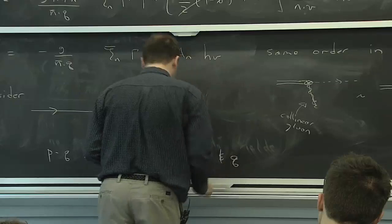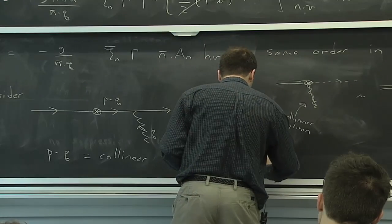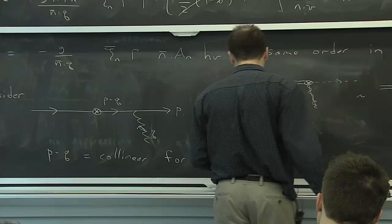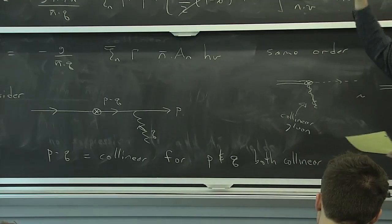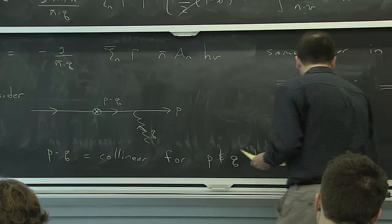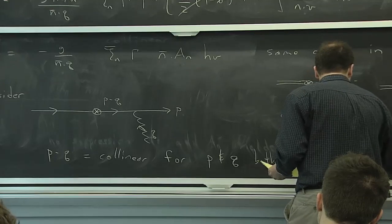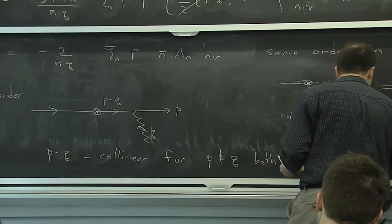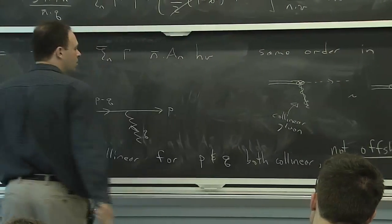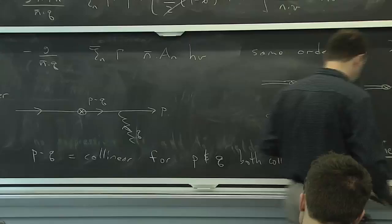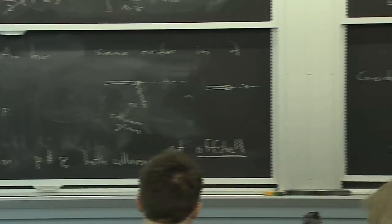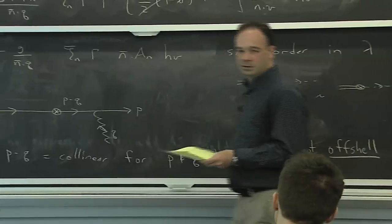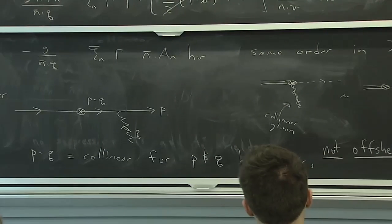So this propagator is not off-shell. In our hyperbola picture, it would live on the blue hyperbola — well within the effective theory, not outside the effective theory. So we don't want to integrate out this propagator. What that means is that in the effective theory itself there will be a Lagrangian interaction that takes into account this diagram.